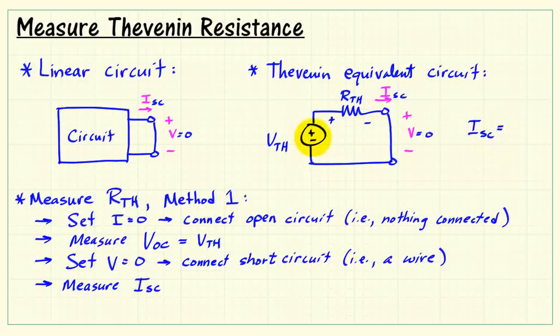The short circuit current relates to the Thevenin equivalent circuit as the Thevenin voltage divided by the Thevenin resistance. We can then calculate the Thevenin resistance as the Thevenin voltage, or open circuit voltage, divided by the short circuit current.